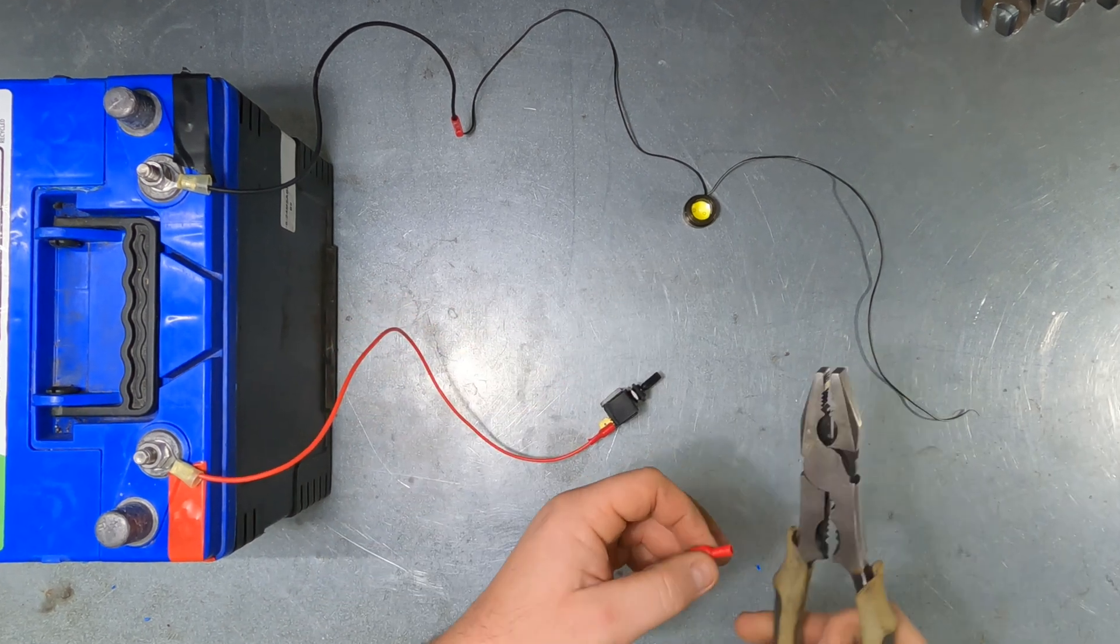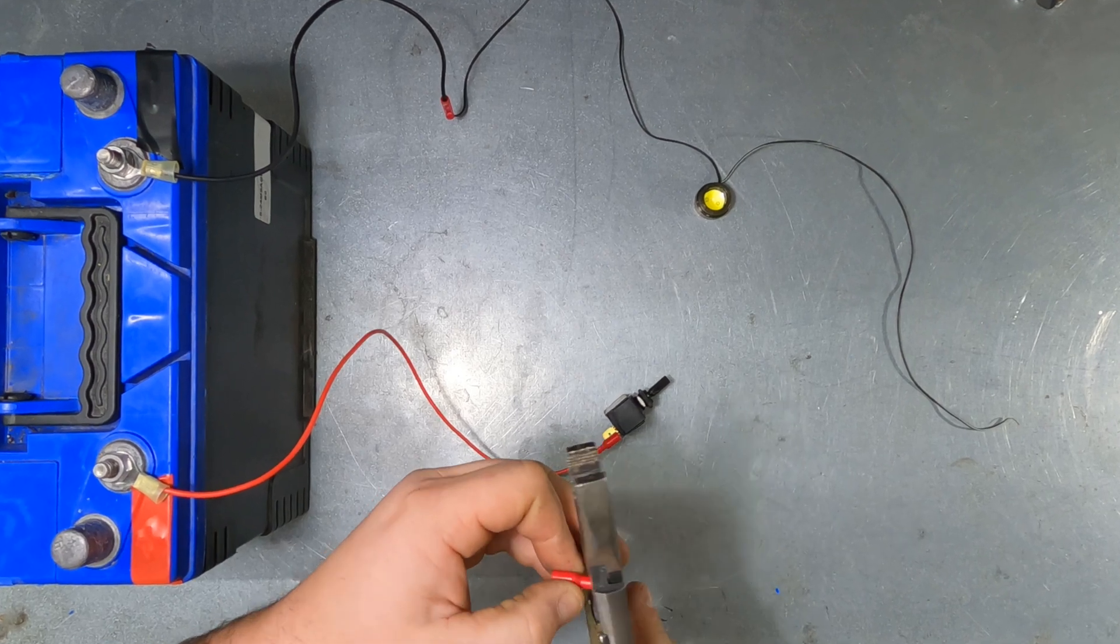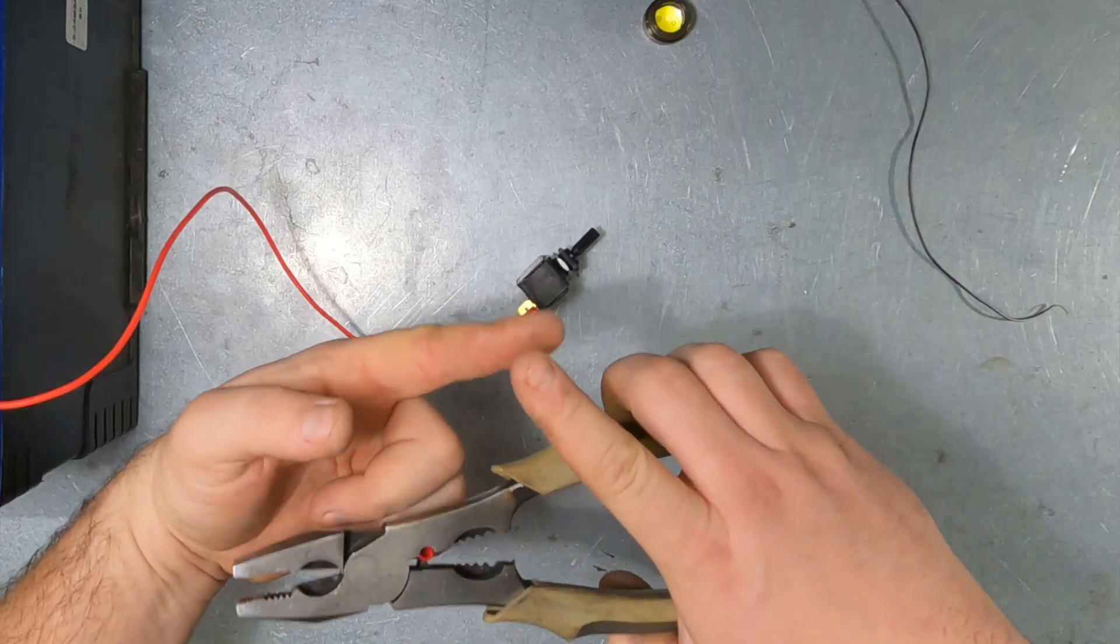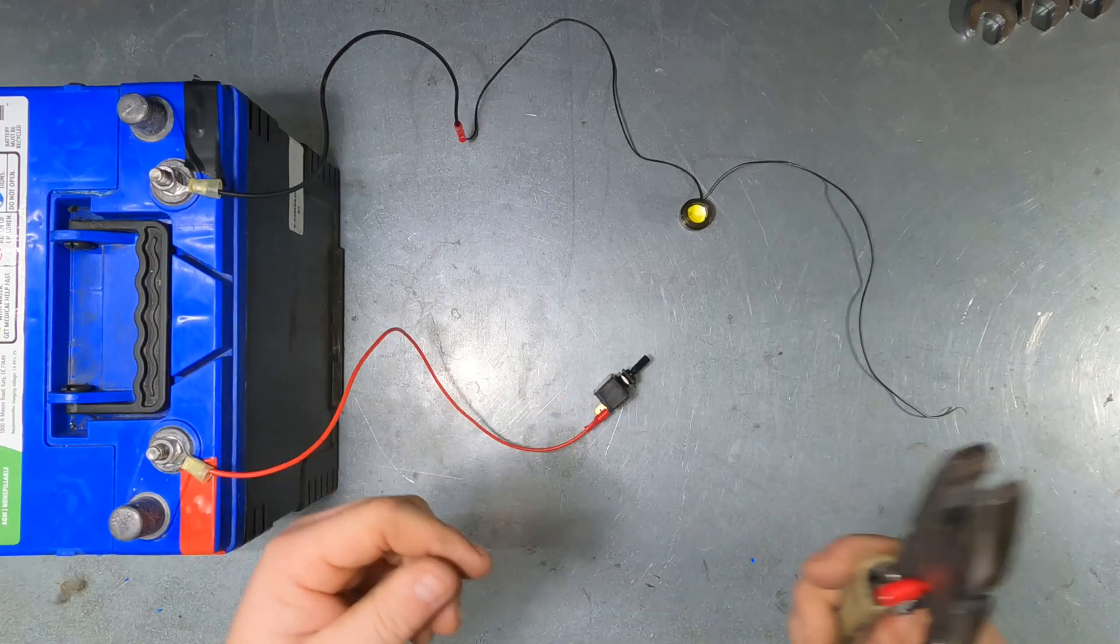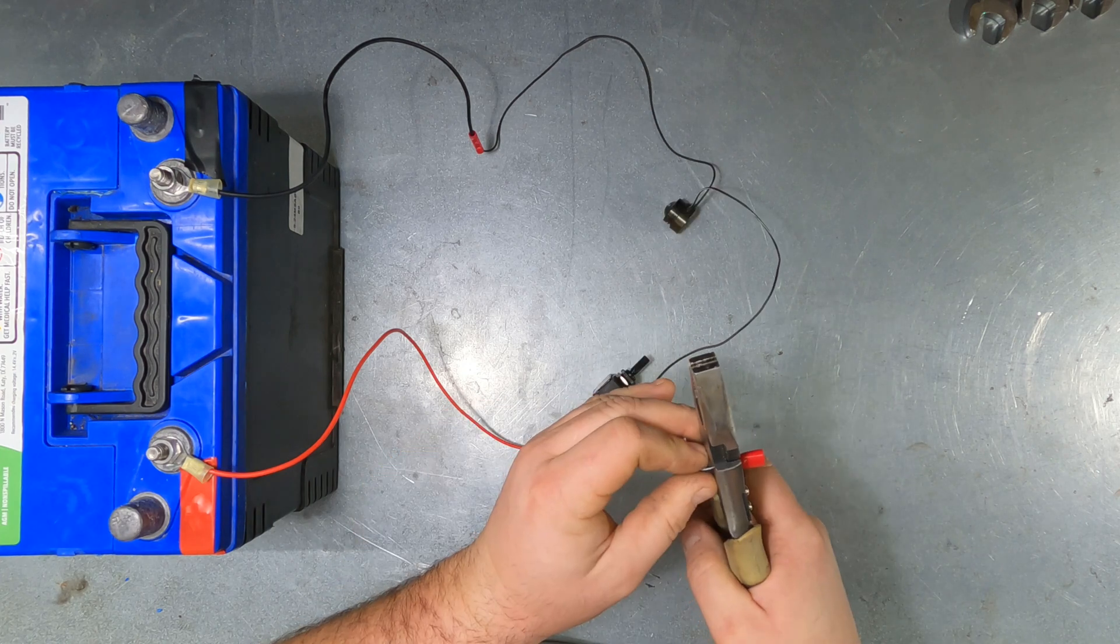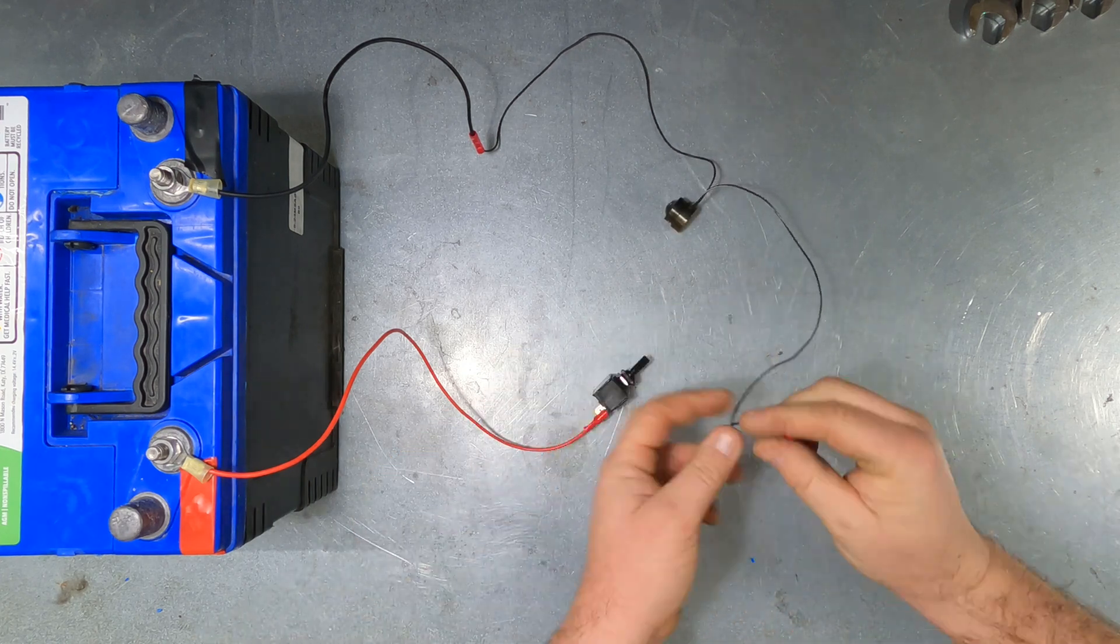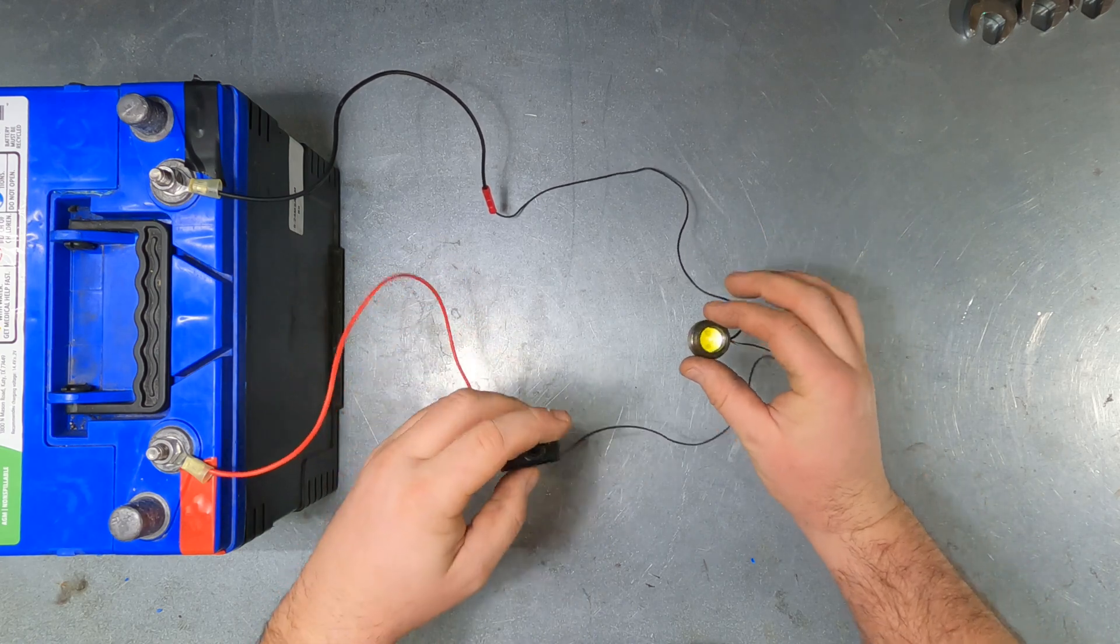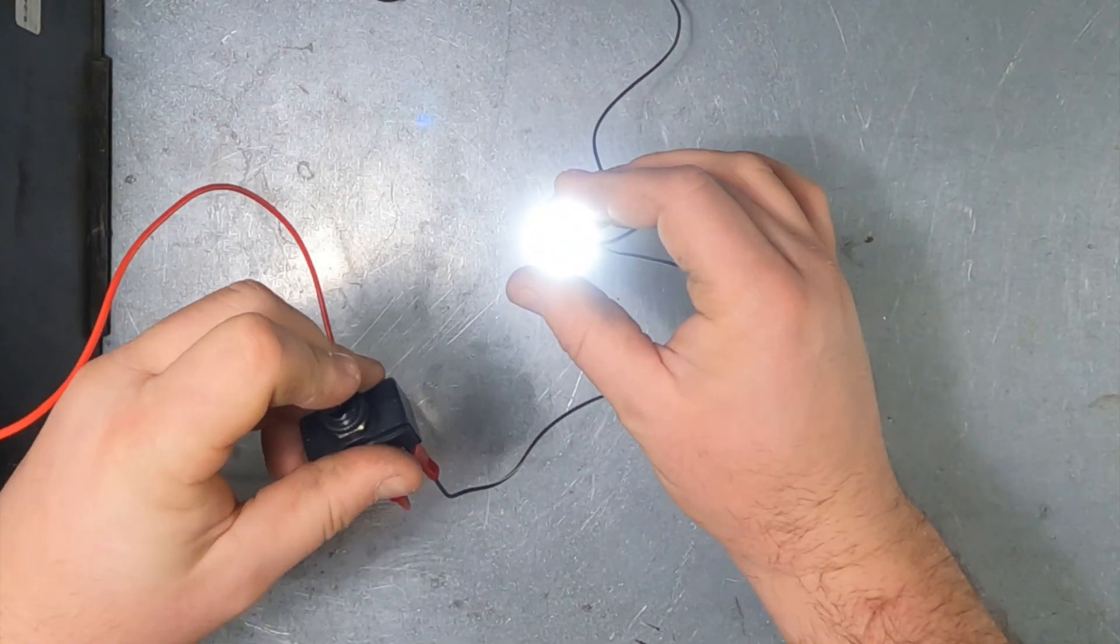All the switch does, the only function is connecting and disconnecting the wire. There's nothing fancy going on in here. It literally is just touching two contacts together, just like we do with the wires. Another name for a switch is an interrupter. That means it just interrupts the flow. Now, we have the power on a switch. I flip this switch. Light.